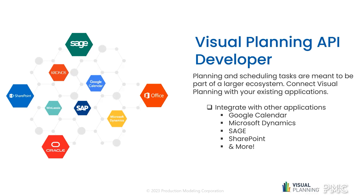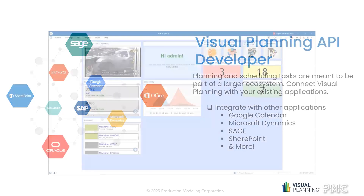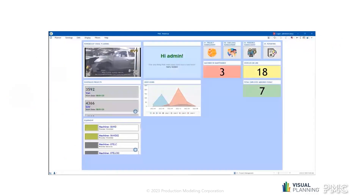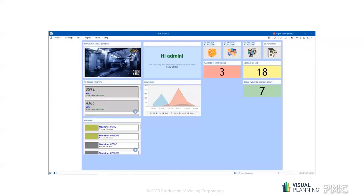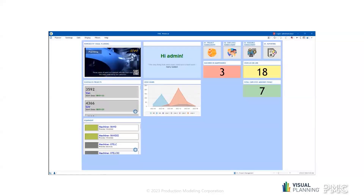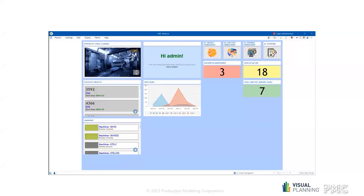There are many ways we could visualize your data, and it is all configured based on your specific needs. Now it's time to take a look at some examples in real time. When you log into Visual Planning, you will be introduced to your customized dashboard. This dashboard is user group specific, meaning it will display the information that is important to you.